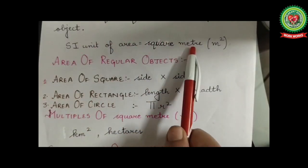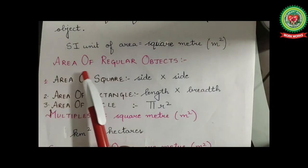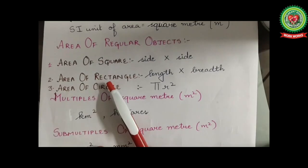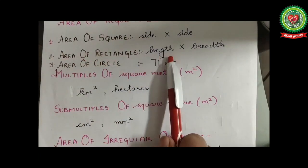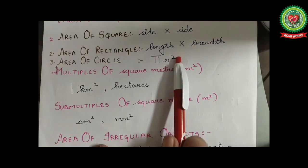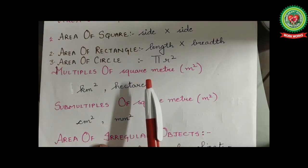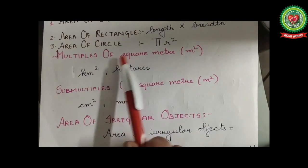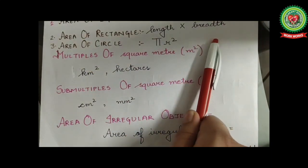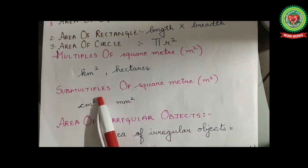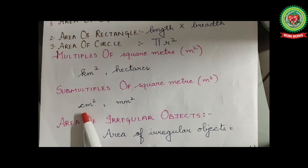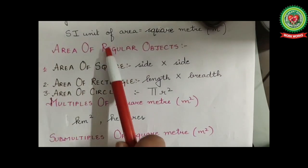The SI unit of area is square meter, denoted by m². Area of regular objects: area of a square equals side × side or side squared; area of a rectangle equals length × breadth; area of a circle equals π r², where π is 22/7 or 3.14. Multiples of square meter are kilometer squared or hectares. Submultiples — smaller units — are centimeter squared or millimeter squared, which are generally used.